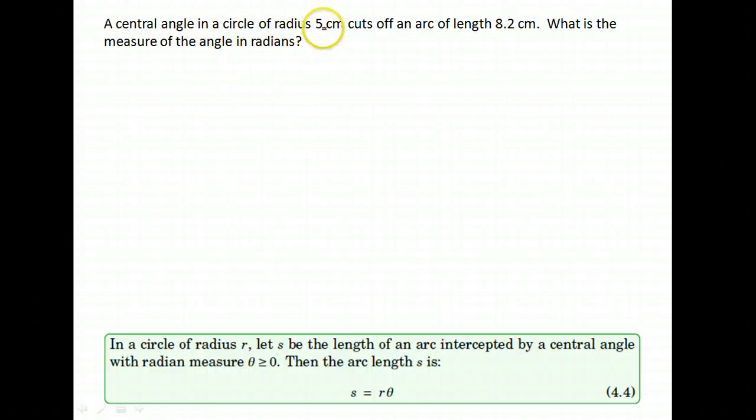A central angle in a circle of radius 5 centimeters cuts off an arc of length 8.2 centimeters. What is the measure of the angle in radians?